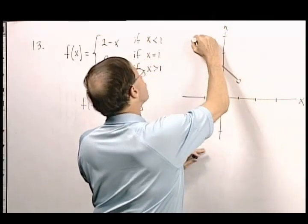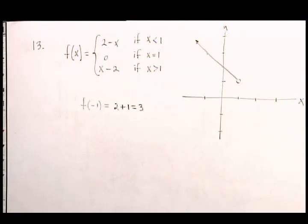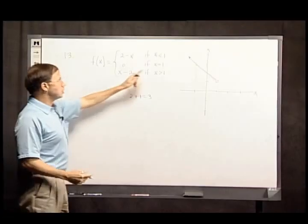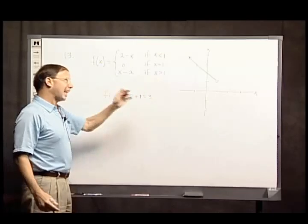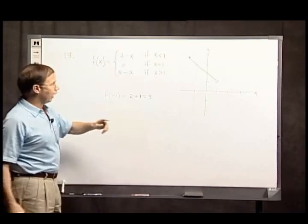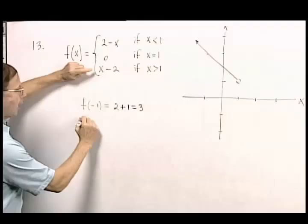It goes on forever, but my board space doesn't. Okay, what about this line? This one starts at x equals 1, but does not actually include that value. It's going to have another value. I'm going to take what is f of 3.